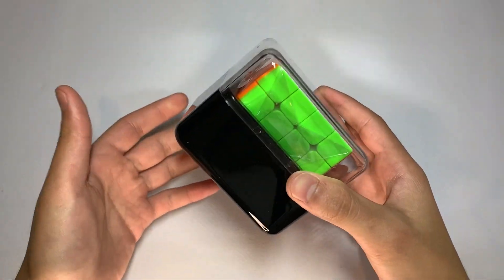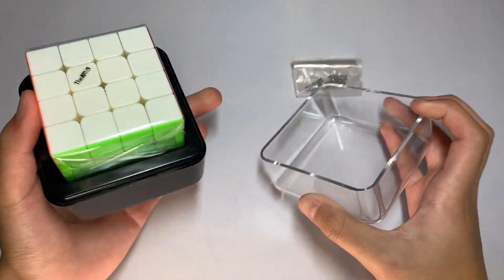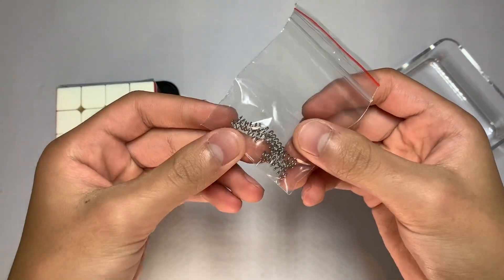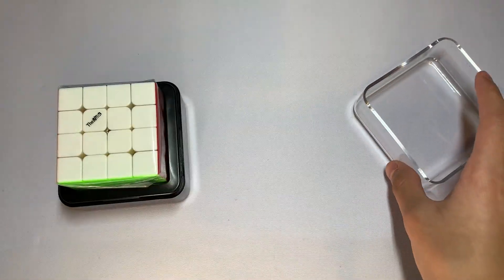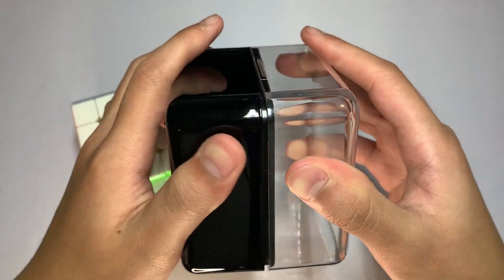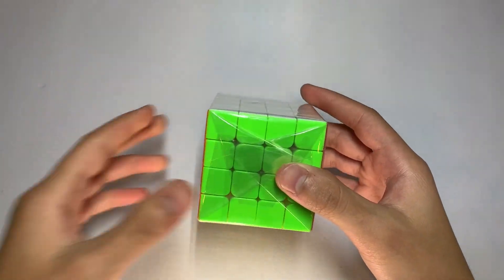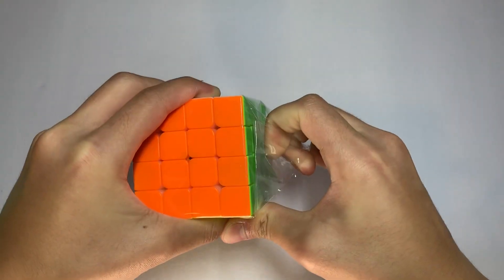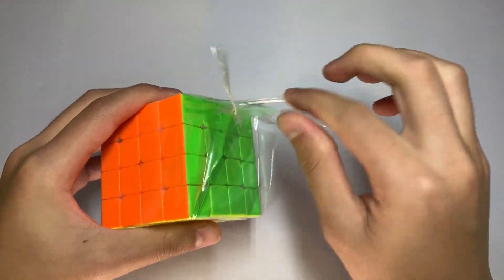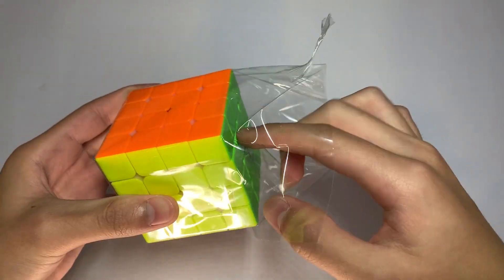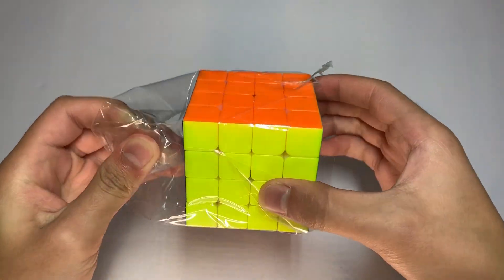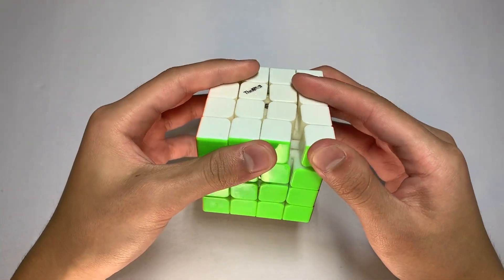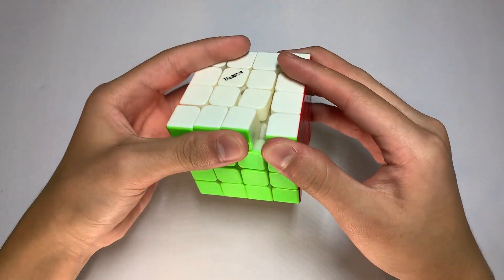Now let's just get into the cube box. Looks like it comes with some extra springs. Let's get into the cube. There we go. Just take a look at it. It looks like it has primary internals.